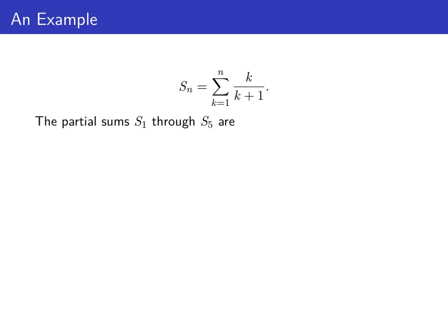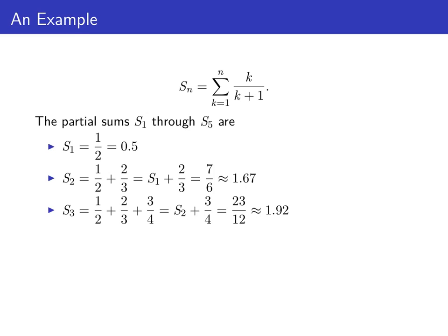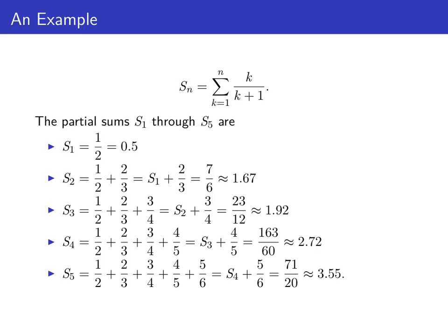The partial sums S sub 1 through S sub 5 are calculated as follows. S1 is just the k equals 1 term, 1 half. S2 is the sum as k goes from 1 to 2 of k over k plus 1. When k is 1 we get 1 half, when k is 2 we get 2 thirds. Notice this is just S1 plus 2 thirds, giving us 7 sixths, which is about 1.67. S3 is S2 plus the k equals 3 term, 3 quarters, giving us 23 twelfths, which is about 1.92. Similarly, S4 is S3 plus the k equals 4 term, giving us about 2.72. And S5 is S4 plus the k equals 5 term, 5 sixths, giving us about 3.55.